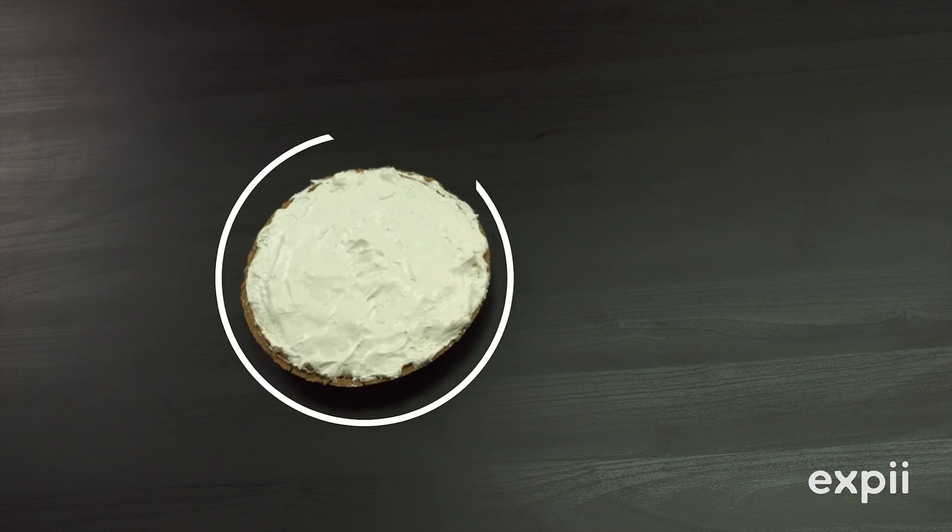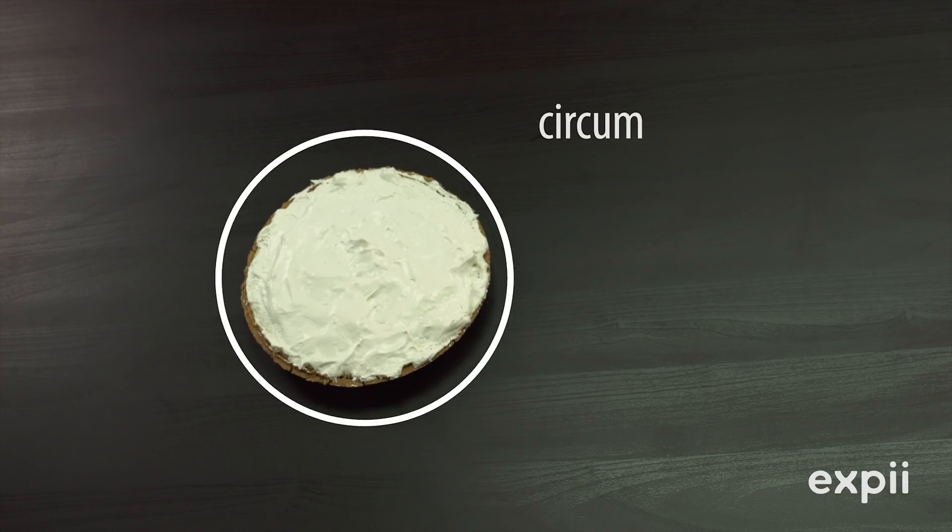Centuries ago, people noticed that whatever size circle they made, the distance around it, the circumference, divided by the distance across, the diameter, always equaled the same number. People had so much trouble figuring out what this number is exactly, they decided to call it pi.